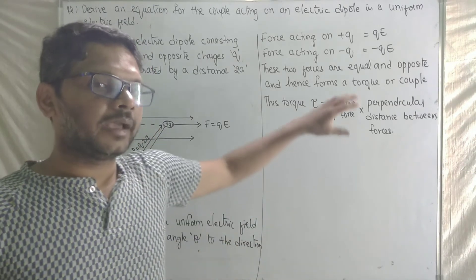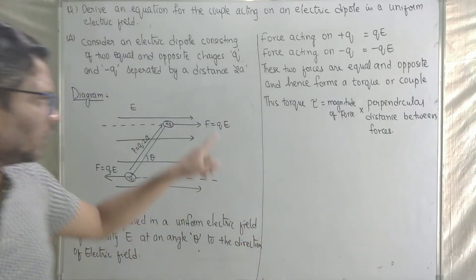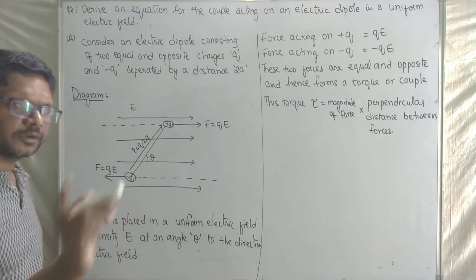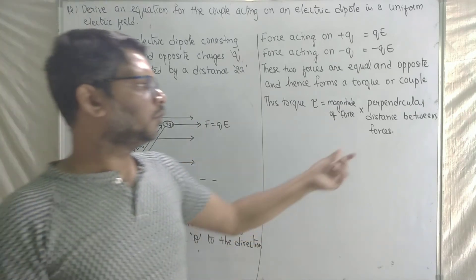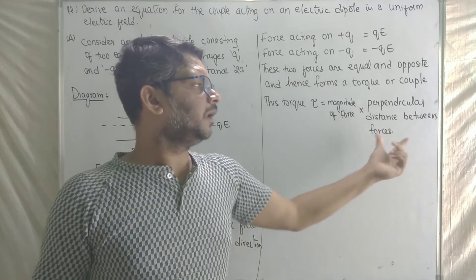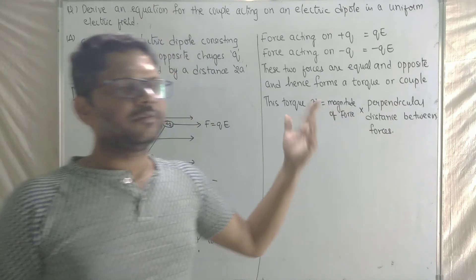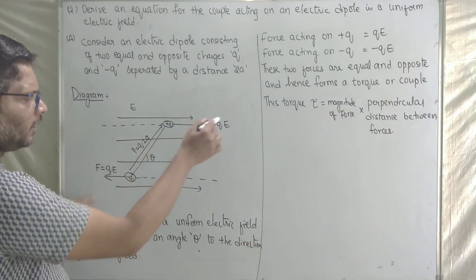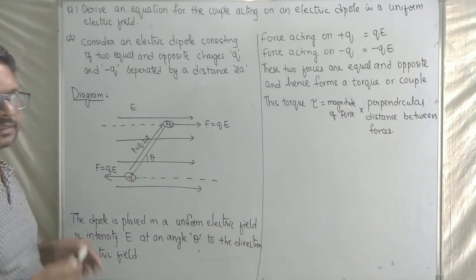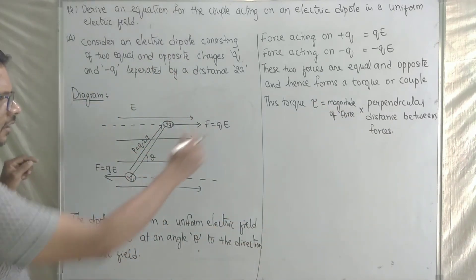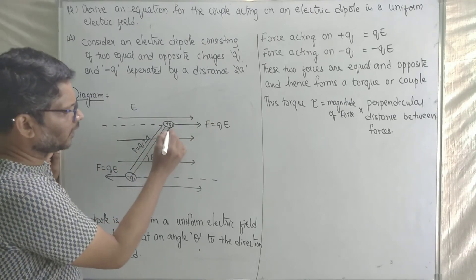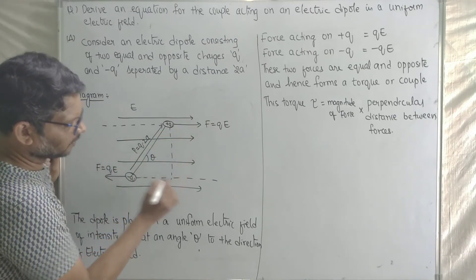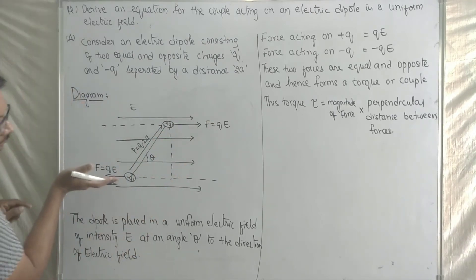Torque is equal to the magnitude of force multiplied by the perpendicular distance between the two forces. The perpendicular distance between the lines of action of the two forces gives us the moment arm.